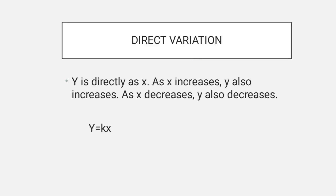Direct variation. Y is directly as X. As X increases, Y also increases. And as X decreases, Y also decreases. The formula is Y is equal to K, which is the constant, times X.